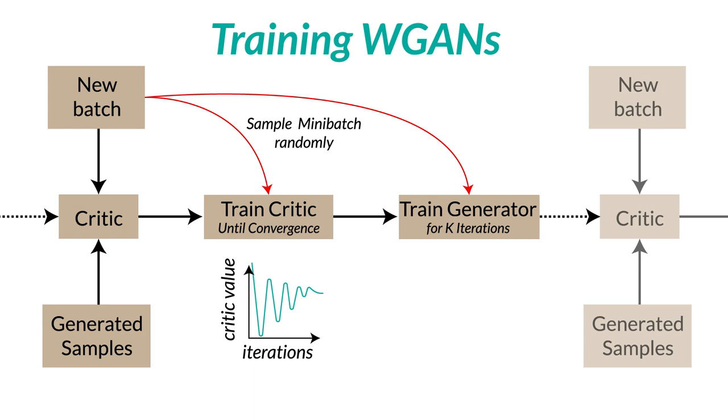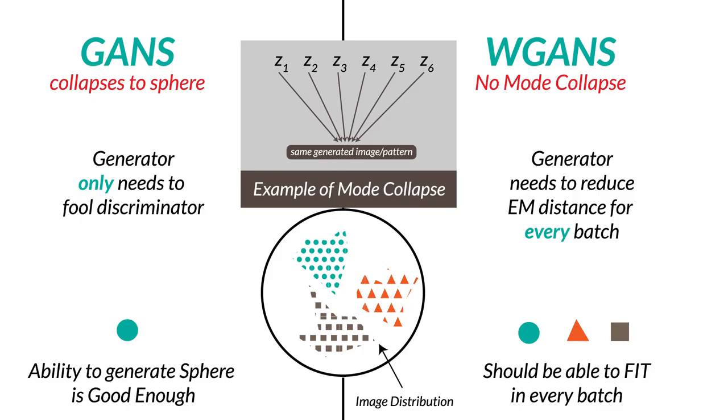This is done for multiple reasons. First of all, when we say that the critic has converged, then it means that the Earth Mover's distance is properly computed, and hence the gradients of this generator will be reliable. Second of all, it gets rid of the classic mode collapse problem. That's because before the generator is tweaked, we give the discriminator sufficient time to converge and estimate the new distance.